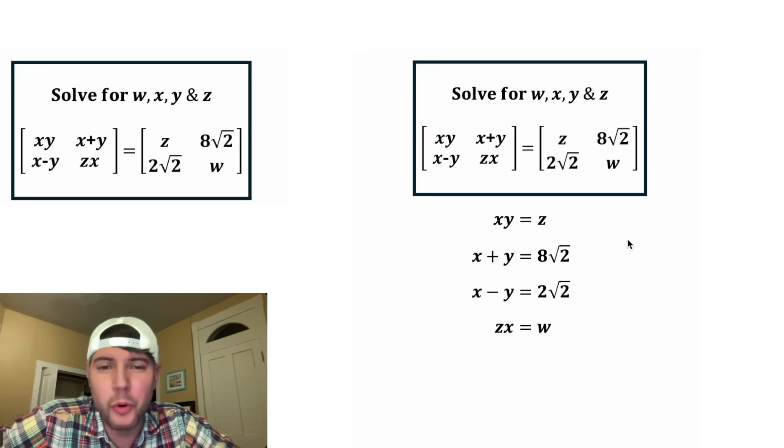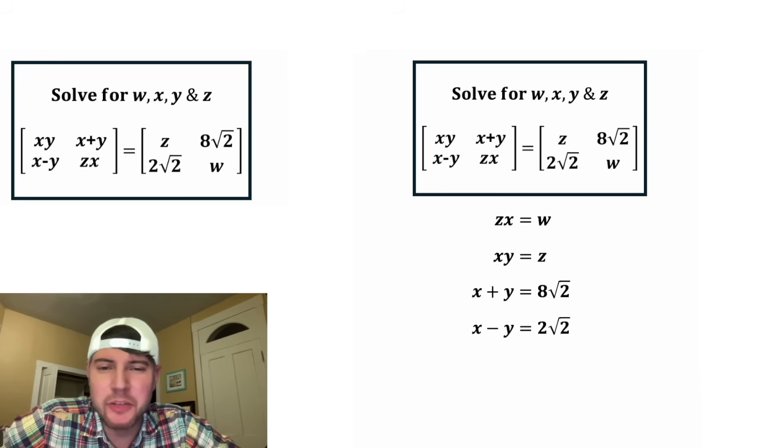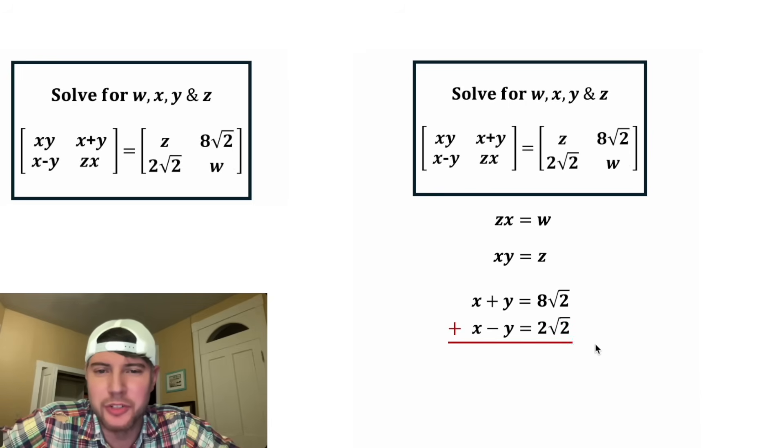This gives us 4 equations and 4 variables, so we've got to solve this 4x4 system of equations. First, I want to rearrange them. And for these bottom two, I want to use elimination. We're going to add these two rows together.